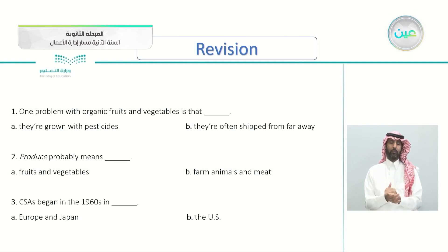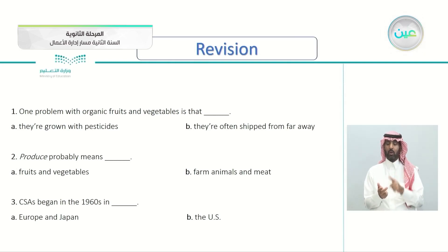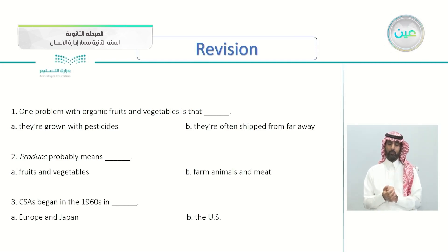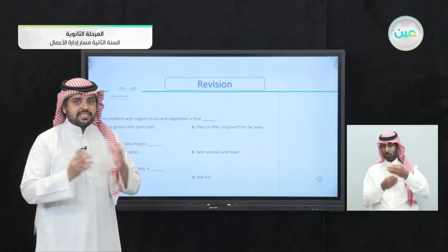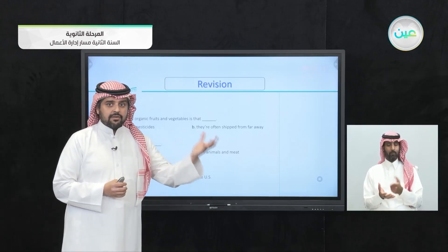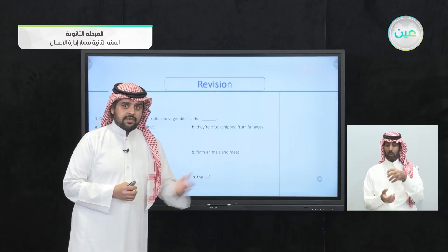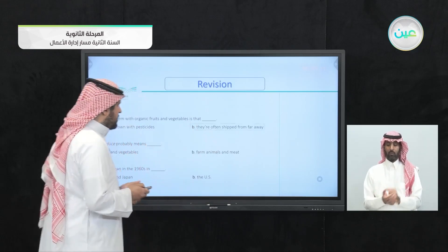Question one: choose one problem with organic fruits and vegetables. Is it A — they're grown with pesticides, or B — they're often shipped from far away? In the article, the problem mentioned about organic food from the supermarket was that they are often shipped from far away, which pollutes the air. The correct answer is B.